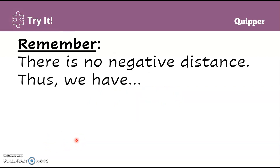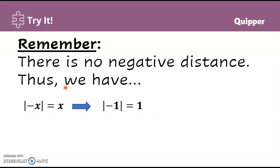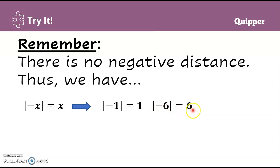Let's remember: there is no negative distance. Thus, the absolute value of negative x is x — the absolute value of any negative number is equal to its positive value. For example, the absolute value of negative 1 is 1, or positive 1. When it's positive, it's okay not to say 'positive' — saying 1 implies it's positive. The absolute value of negative 6 is 6. The absolute value of negative 20 is positive 20, or 20.